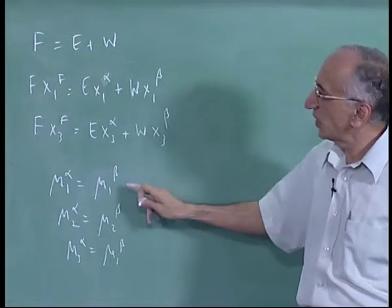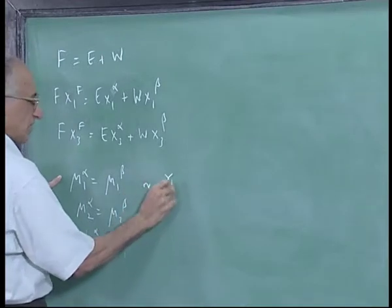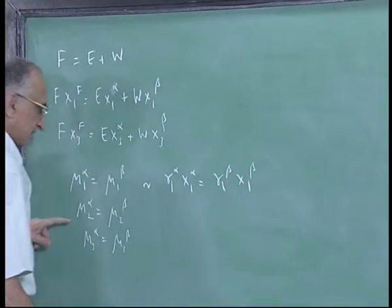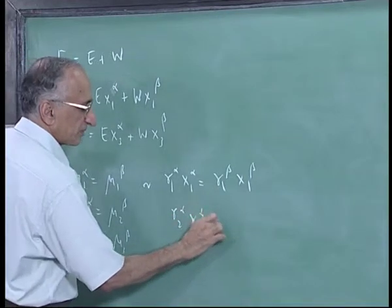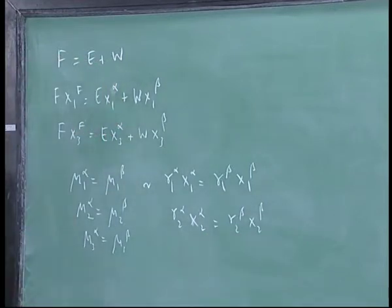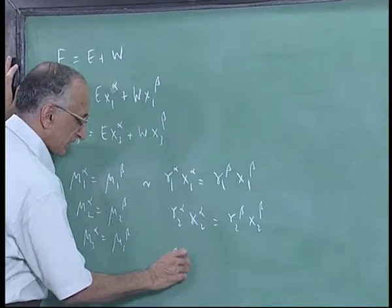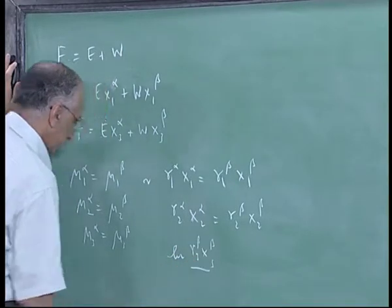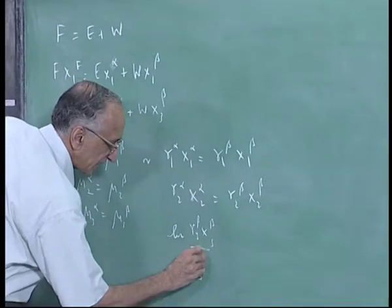Essentially you will have these equations mu 1, 1 and 2 are actually solvent like substances. So you have gamma 1 alpha x1 alpha is equal to gamma 1 beta x1 beta. This will be again gamma 2 alpha x2 alpha is equal to gamma 2 beta x2 beta.